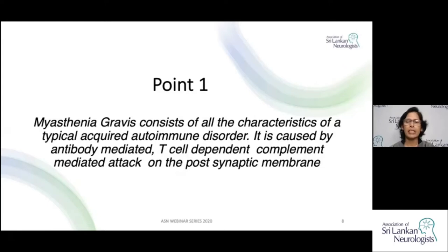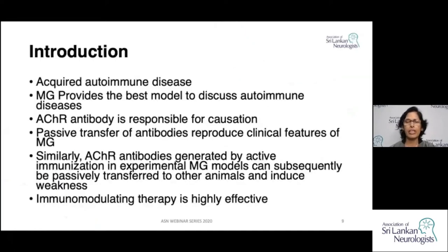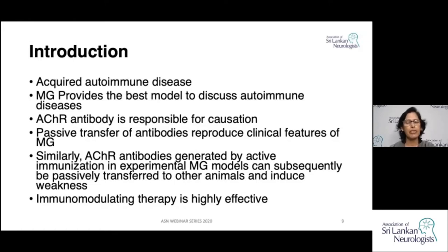It is caused by antibody-mediated, T cell-dependent, complement-mediated attack on the post-synaptic membrane. The antibody responsible for causation of myasthenia has been recognized — it is acetylcholine receptor antibodies. It has been possible to produce animal models by injecting acetylcholine receptor and by passive transfer of antibodies.